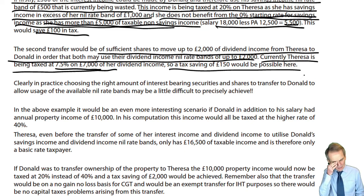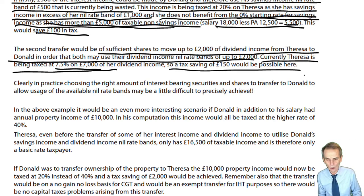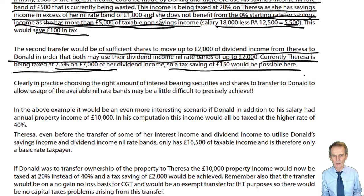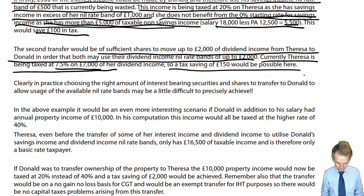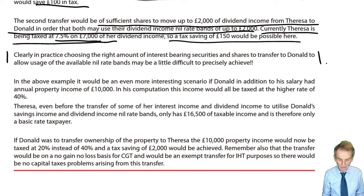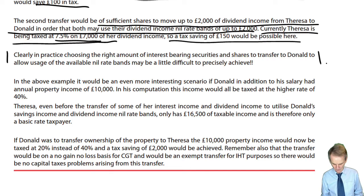It's not a huge amount. In practice it would be difficult to get that precise figure because you do not know what profits of companies are going to be or what future dividends declared will be. But we're not dealing with the real world — we're dealing with an examination question. The planning point is: moving income from a basic to a higher rate taxpaying spouse would not appear to make sense, other than to take advantage of nil rate bands that in the hands of the higher rate taxpayer are not being used. The practical issue of moving sufficient investment across to generate those very precise income levels for Donald is going to be tricky to achieve.